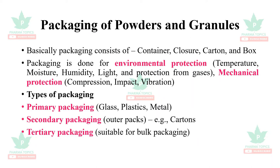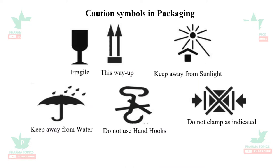Tumbling uses blenders to mix large volume powders. Packaging of powders consists of container, closure, carton, and box. Packaging provides environmental protection such as protection from temperature, moisture, humidity, light, and gases, as well as mechanical protection from compression, impact, and vibration. Caution symbols include fragile, this way up, keep away from sunlight, keep away from water, do not use hand hooks, and do not clamp.